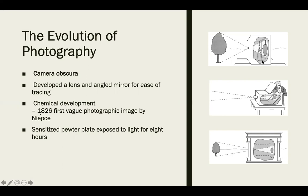This early idea had no engraving or burning process to permanently put the image onto something — it wasn't actually a photo. But it was really helpful for artists who were drawers or painters to do an outline of whatever they were drawing instead of freehanding it, saving a lot of time. Later, we develop lenses and angled mirrors to ease tracing. It's not until 1826 that we see the first actual chemical development happening.